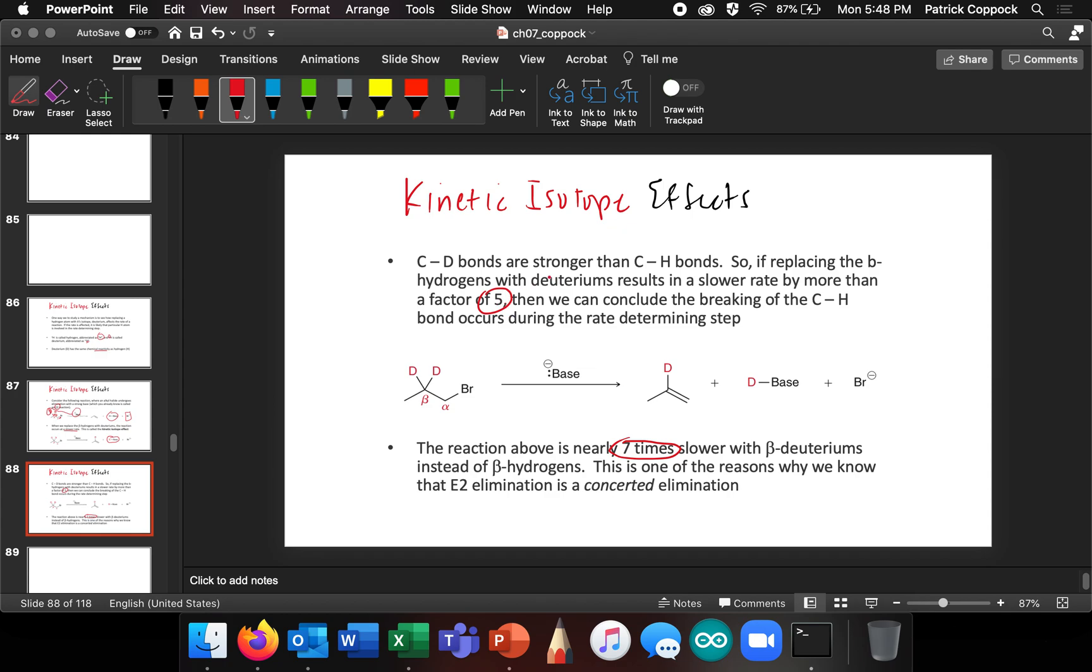Then we conclude if we do this reaction and we put deuteriums here and it reacts a lot slower, then we conclude that these hydrogens are the ones that are being pulled off. And we can also say that the stripping off that hydrogen occurs during the rate determining step.